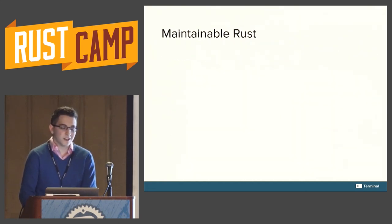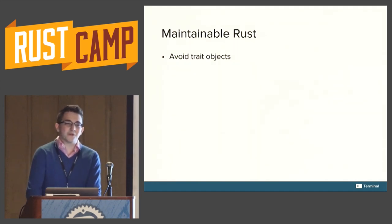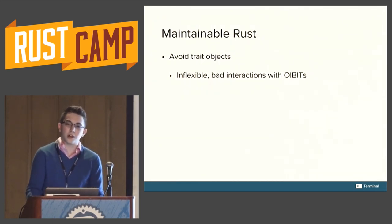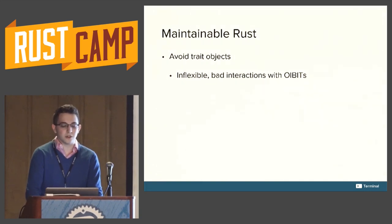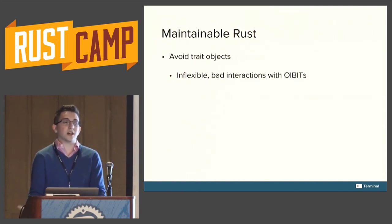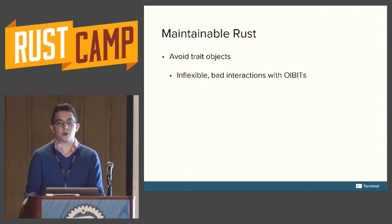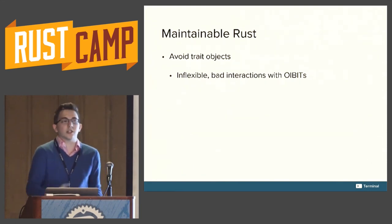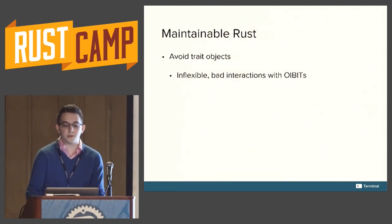Some points on maintainability: avoid trait objects for the most part. They're not very flexible in the sense that you have to make the choice up front about exactly what traits are going to be included in a trait object. This can be really inconvenient, especially with interactions with OIBITs — opt-in built-in traits — like Send and Sync. When you make a trait object, you have to decide up front whether it's going to implement Send and Sync. Sometimes you make the wrong choice, and it can be a lot of work to go back and change this. Use generics instead — at the usage sites where you need Send and Sync, you can just add them. It's a lot more flexible than the trait object setup.